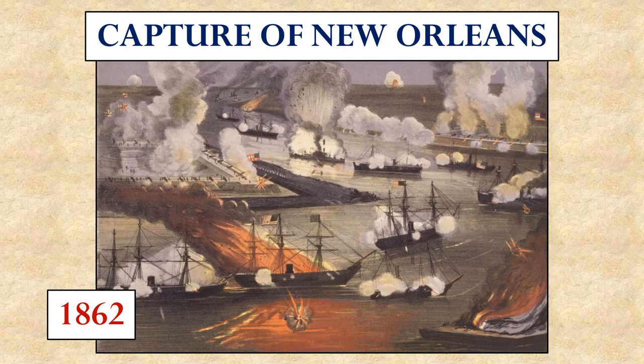Yet, despite setbacks in those inland battles such as Bull Run, the United States had an advantage along the coast. The U.S. Navy was superior to that of the Confederacy, and they used that advantage to attack the port of New Orleans and capture it. This was a great blow to the Confederacy, because with the end of the Mississippi River now shut off to them, there were many places in the Confederacy that now had no trade with the outside world.